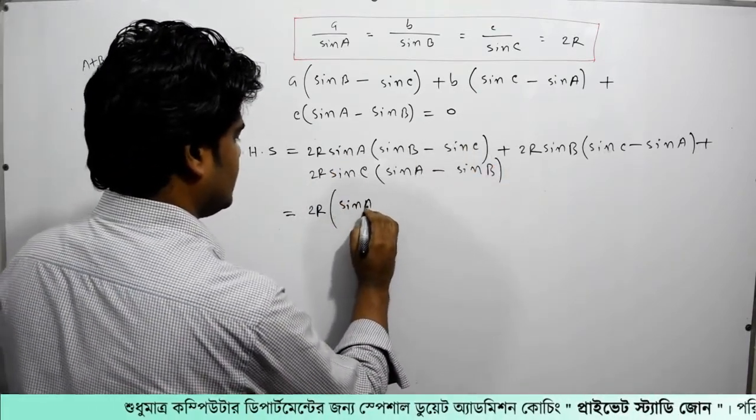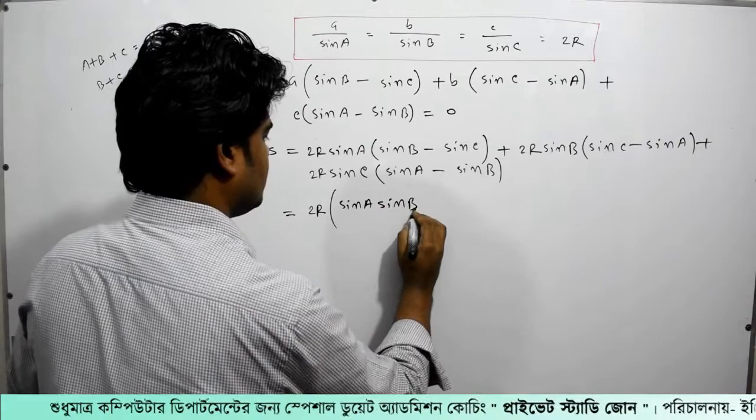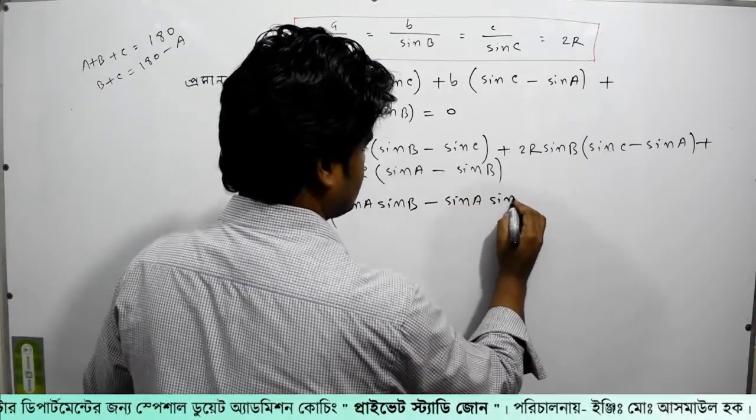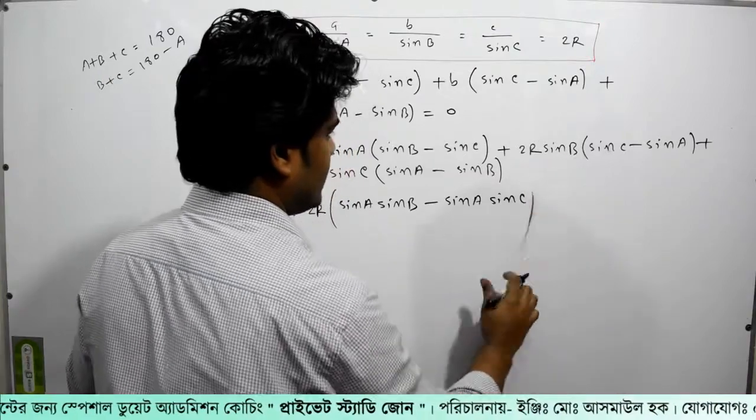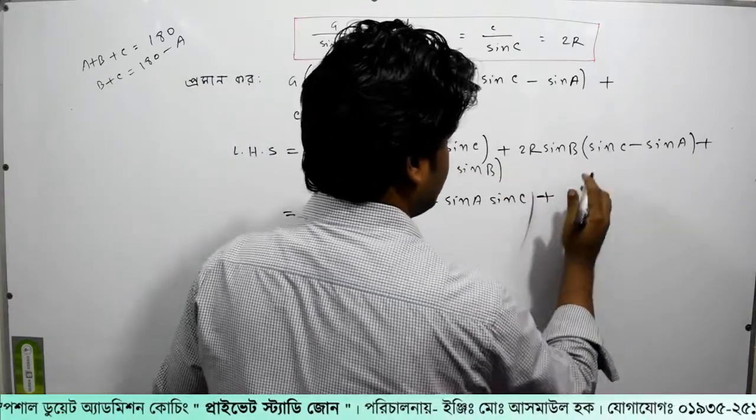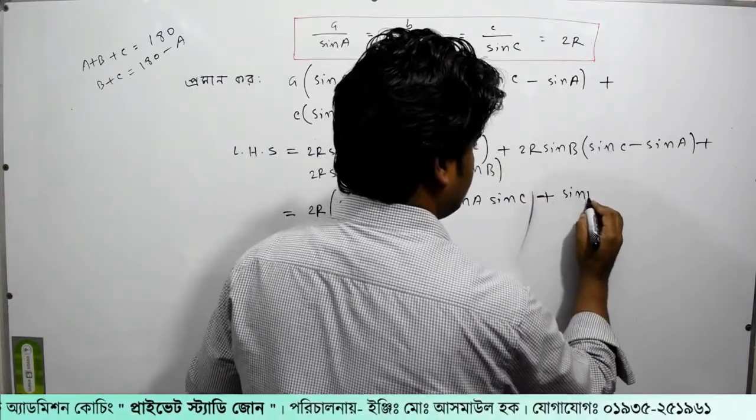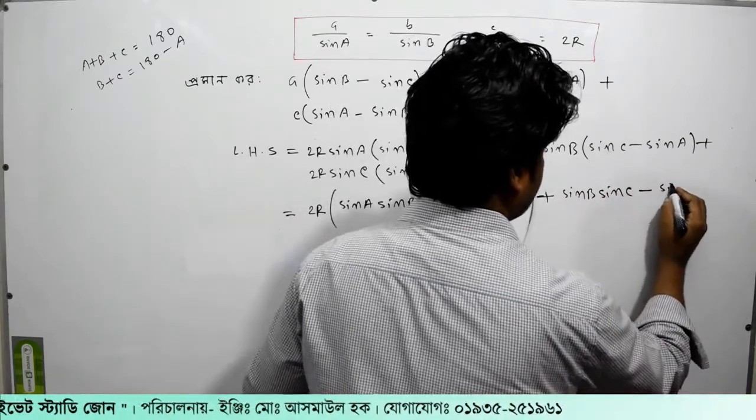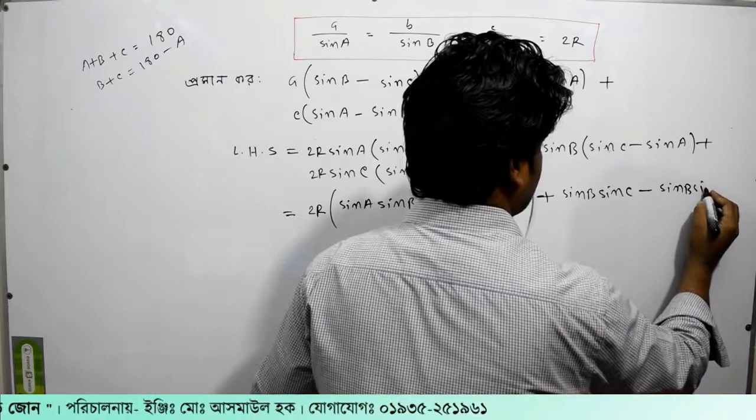This equals 2R sin A, sin B minus sin C, plus 2R sin C, sin B minus sin A.